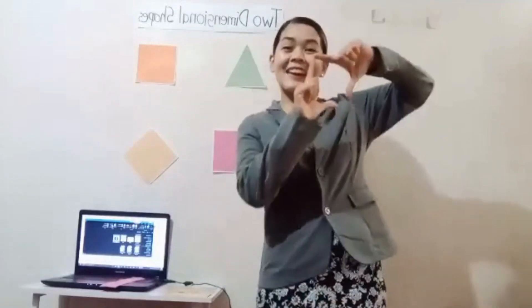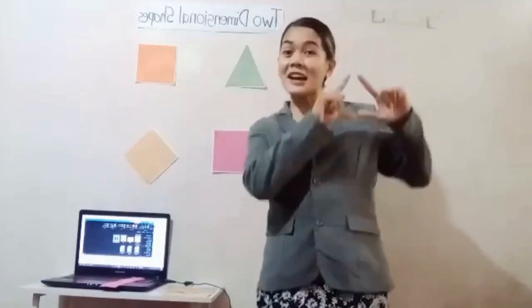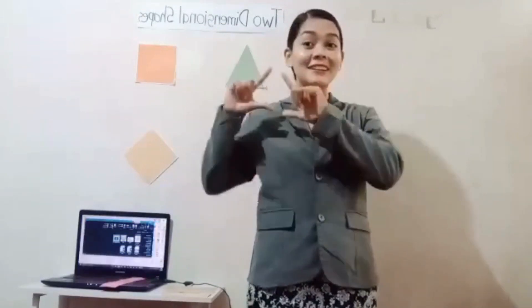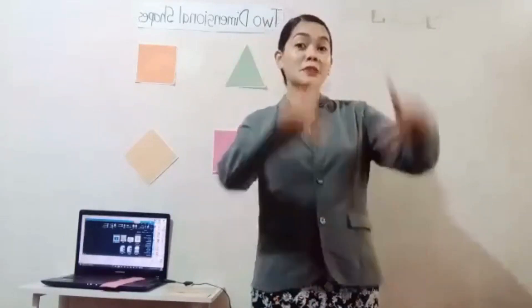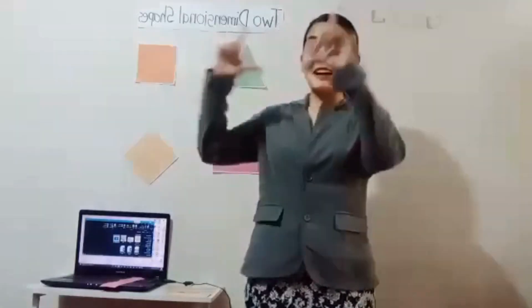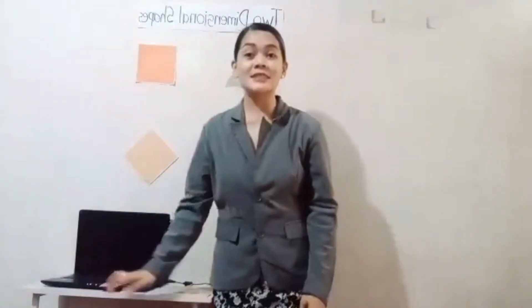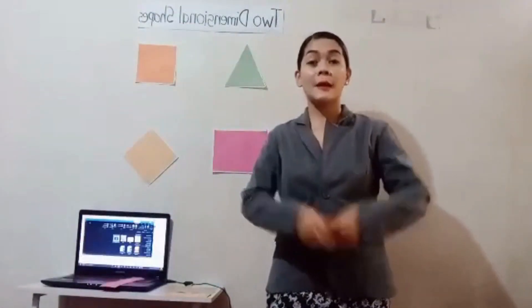Okay, now let us start singing the shape song. Square and circle, square and circle, triangle, triangle, rectangle and oblong, diamond, diamond. Okay, very good everybody!